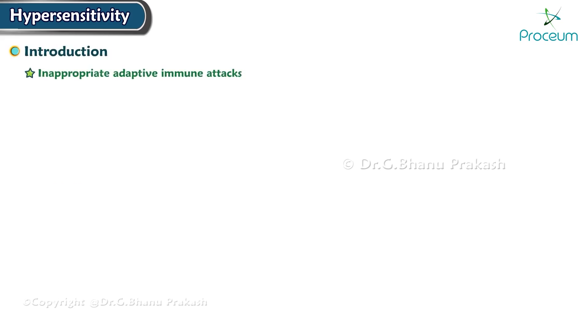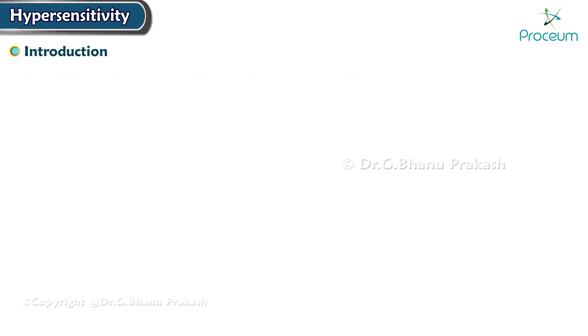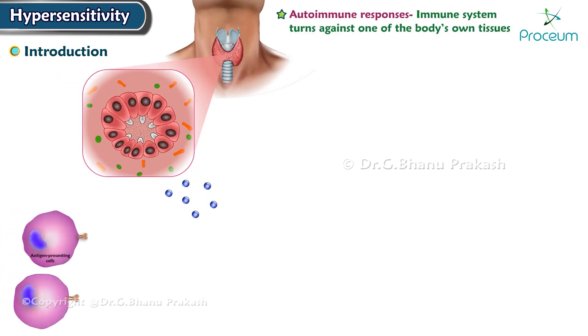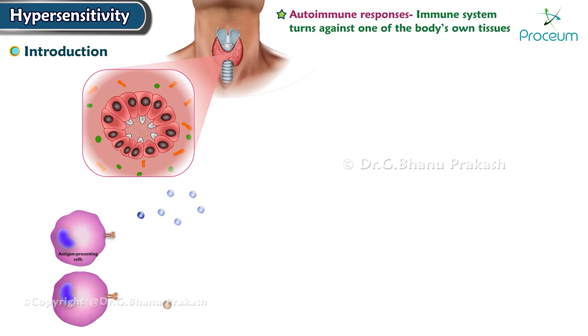Inappropriate adaptive immune attacks cause reactions harmful to the body. These include autoimmune responses, in which the immune system turns against one of the body's own tissues.